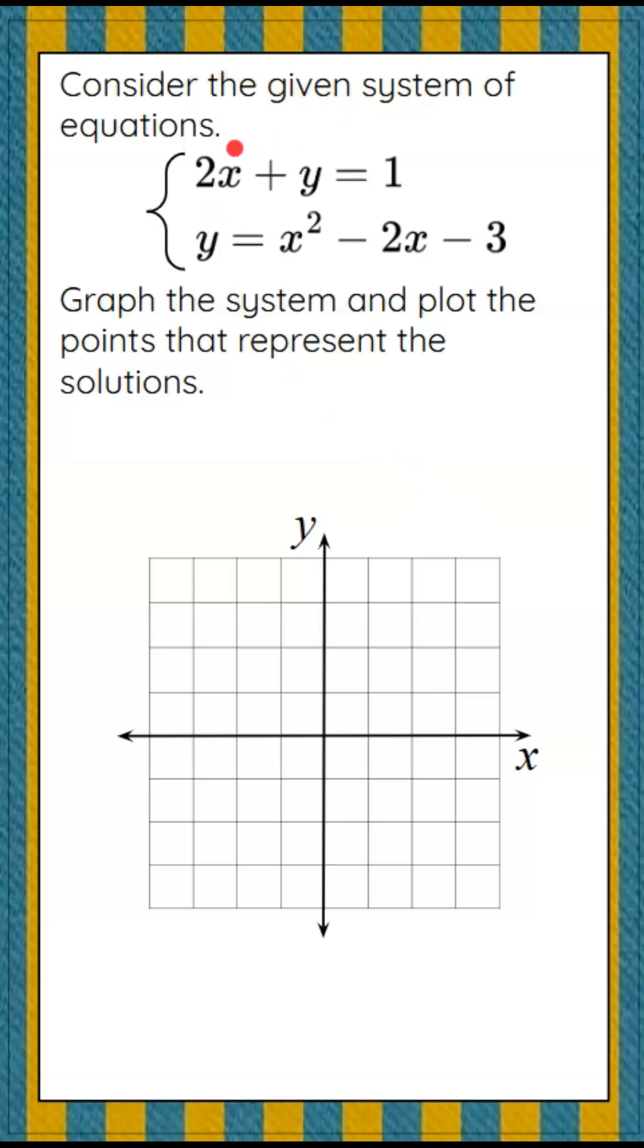We're asked to consider the given system of equations: 2x plus y equals 1 and y equals x squared minus 2x minus 3. We're asked to graph the system and plot the points that represent the solutions to the system.